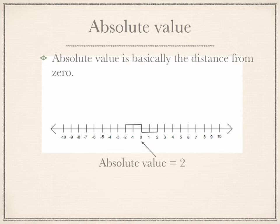Absolute value is basically the distance from zero. Absolute value equals two here.